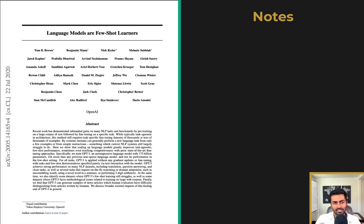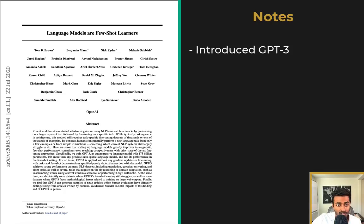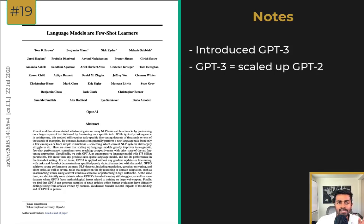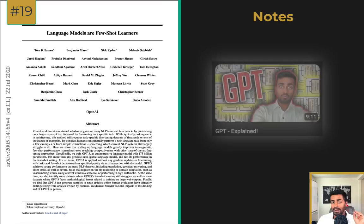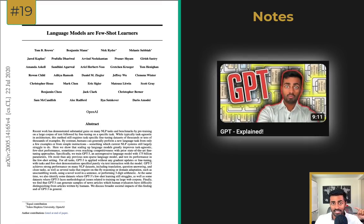While GPT-2 wasn't super successful, the paper Language Models Are Few-Shot Learners, which introduced GPT-3, was pretty successful. GPT-3 is essentially a scaled-up version of GPT-2, with a suite of architectures whose largest version has 175 billion parameters.